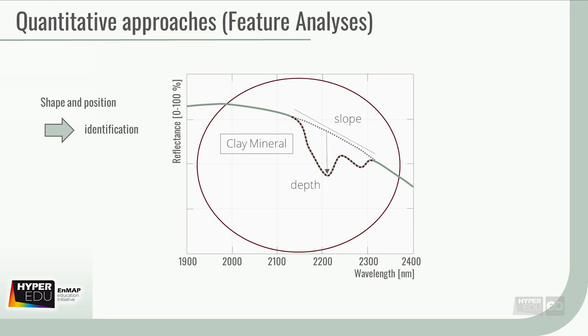Now, the parameterization of the feature, for example, by its absorption depth or spectral slope, allows for the quantification of the soil property that caused the feature, relative if no in situ data is available, but even absolute when combined with in situ information. This step is also called quantification by calibration.